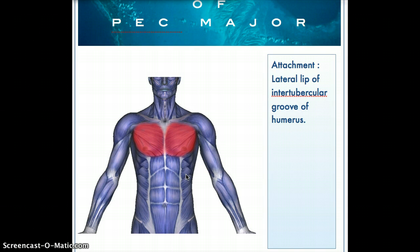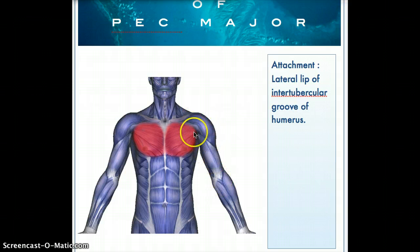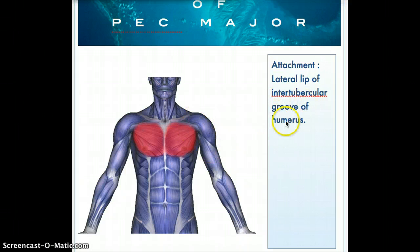Now how does this muscle have anything to do with the functions of the humerus or the arm? There is a small attachment that pec major makes with the humerus. That attachment is at the intertubercular groove of the humerus — that's where pec major attaches itself onto the humerus.